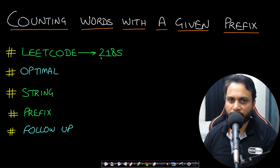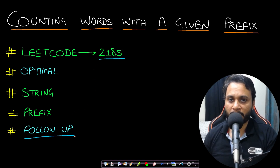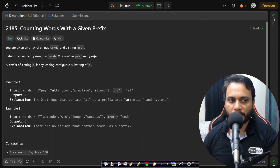Hello guys, welcome back to TakeDose. In this video we will look at the 'counting words with a given prefix' problem, which is LeetCode number 2185. We will look at an interesting follow-up problem at the end of the video and solve it with an optimal approach, so stay tuned till the end.